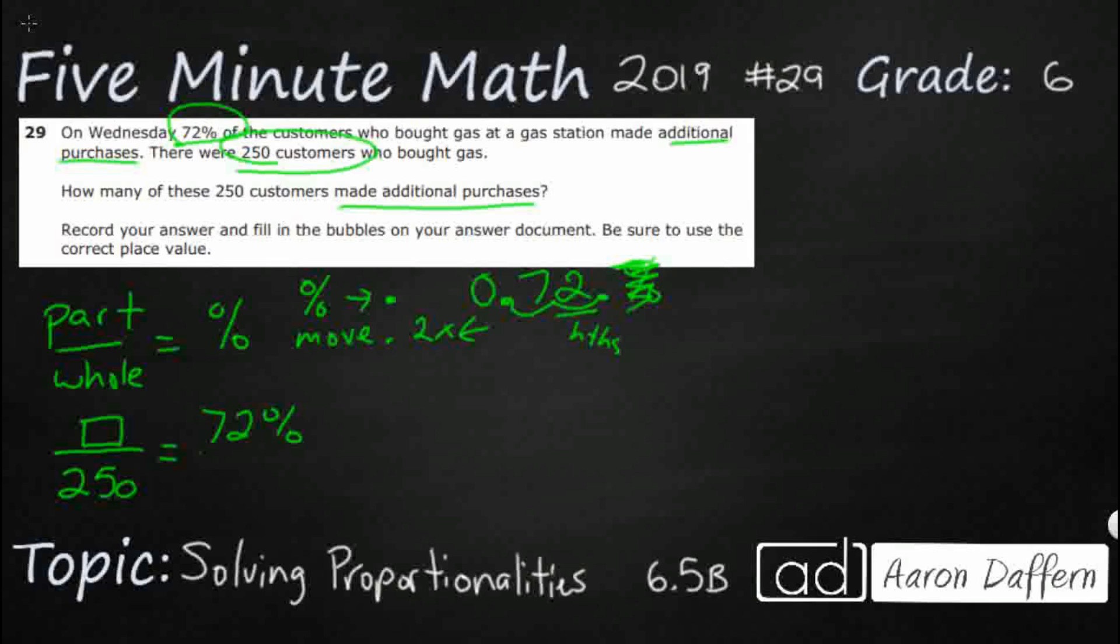And there we go, 72 hundredths. So we can take that decimal, go straight into a fraction. Now we can do some cross multiplication.